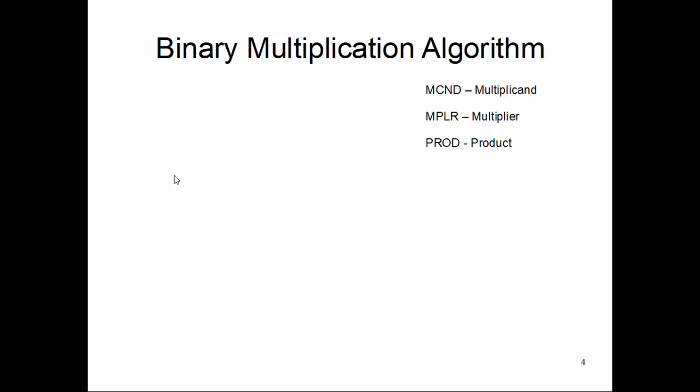Let's look at the algorithm we discussed so far. We start and assign product as 0, then look at the LSB of the multiplier - multiplier bit 0, this LSB - and test if it is 0 or not.